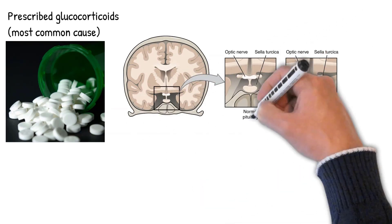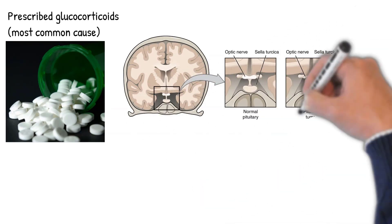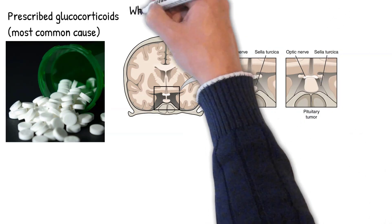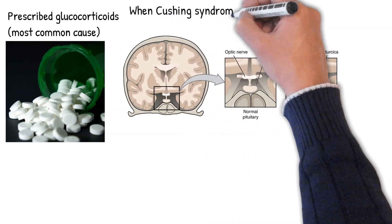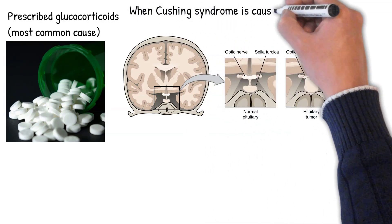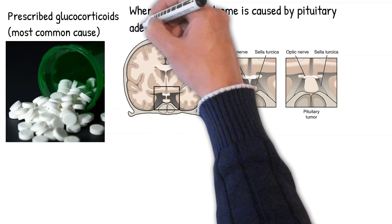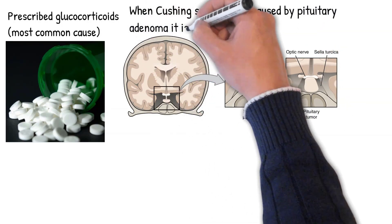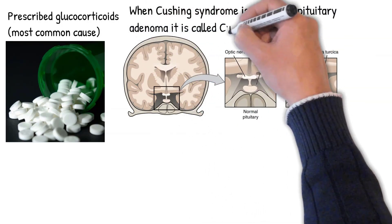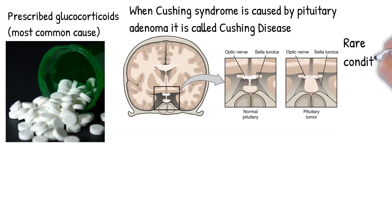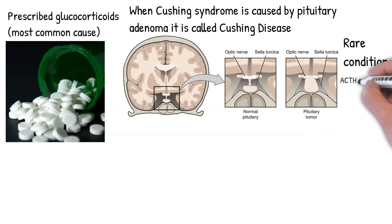Cushing's syndrome is called Cushing's disease when it is caused by increased secretion of adrenocorticotropic hormone (ACTH) from the anterior pituitary — secondary hypercortisolism — most often as a result of a pituitary adenoma. Cushing's disease is rare, occurring at one case per million people per year.